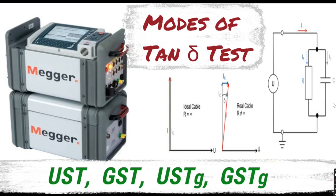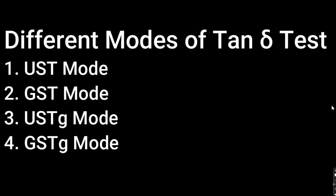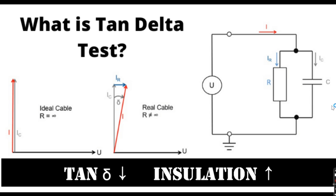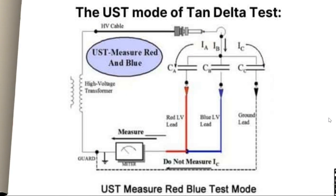Today we shall talk about different modes of tan delta testing for electrical substation maintenance. Tan delta testing for different equipment is a very common test performed, but to carry out the test correctly and get perfect results, it is important to know which mode should be used where. Tan delta test is also known as dissipation factor test or loss angle test. For a perfect insulator, the tan delta should be zero; however, since no perfect insulator exists, the tan delta is always more than zero. Simply put, the lesser the tan delta value, the better the insulation.